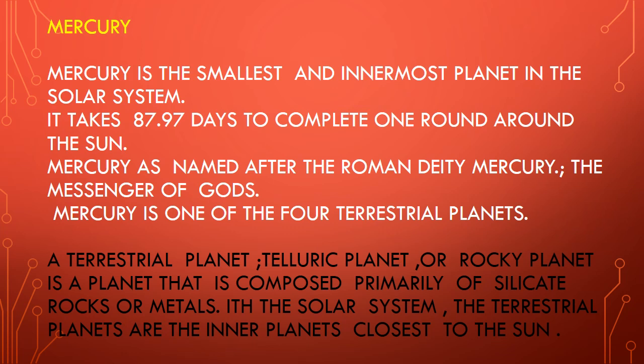Let's talk about Mercury. Mercury is the smallest planet and the innermost planet in the solar system. It takes 87.97 days to complete one round around the Sun.